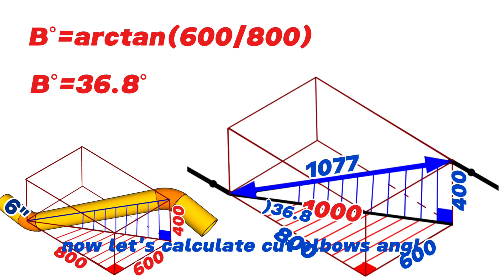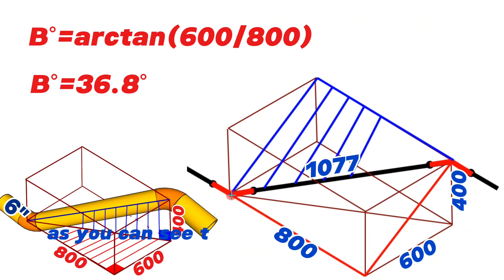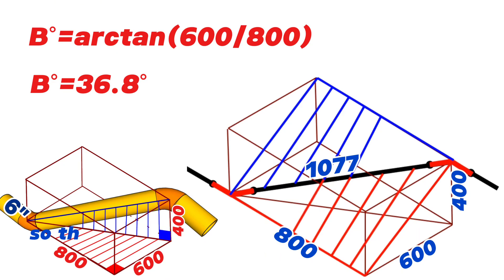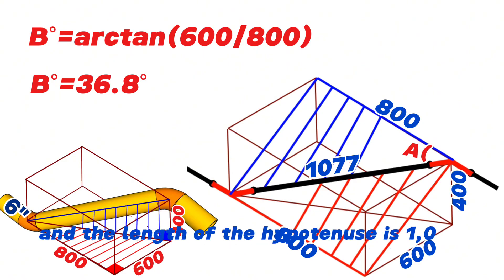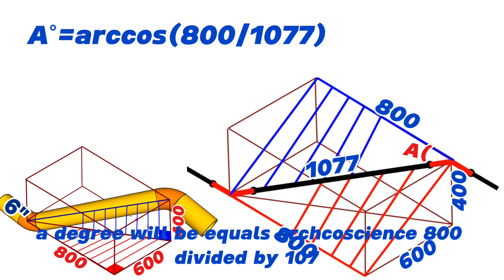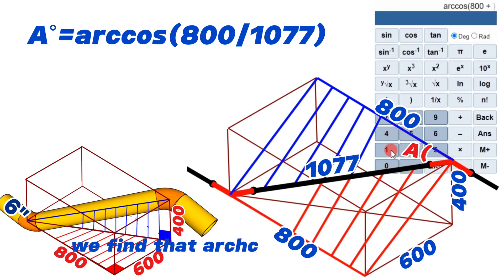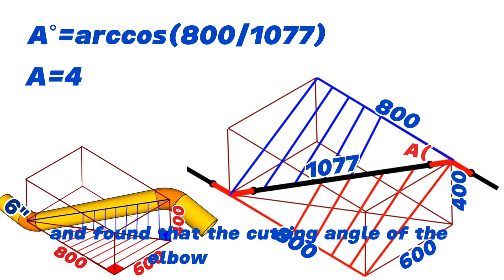Now let's calculate the cut elbow angles. We complete each elbow from the back to a right-angled triangle, provided that they are on the same plane. These right triangles formed by the dashed lines are equal to each other, so the intersection angle of the elbows will be the same. Let's mark these angles with letter A. In the right triangle, the adjacent side is 800mm and the hypotenuse is 1077mm. Therefore angle A equals arccosine of 800 divided by 1077, which equals 42 degrees.